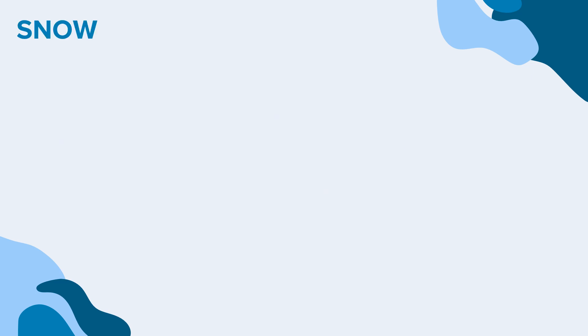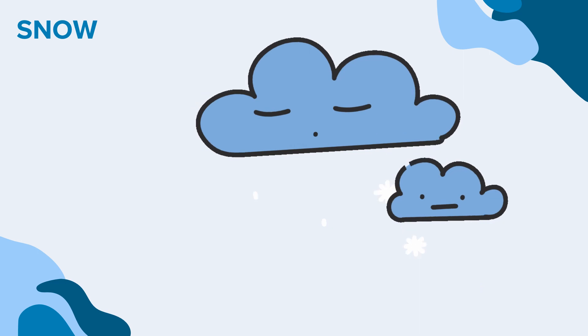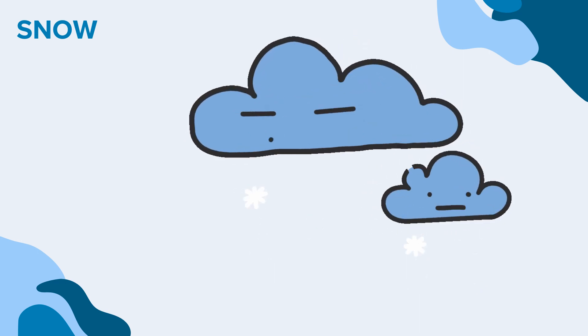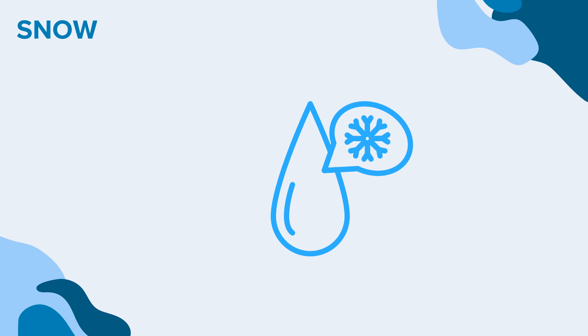Now, what is the meaning of snow? The term snow refers to frozen precipitation that falls from the sky in the form of small ice crystals. These ice crystals combine to form snowflakes, which vary in shape and size depending on factors such as temperature, humidity and atmospheric conditions.